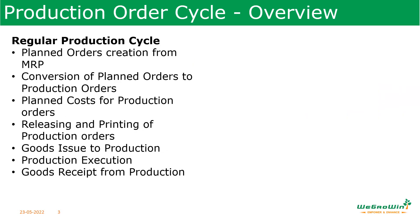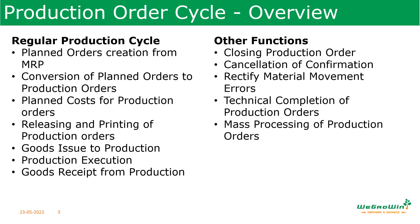Now let us see the overview of the production order. Planned orders are created from MRP — material requirement planning — and then these planned orders are converted into production orders. The planned cost for the production orders is calculated, then the production orders are released, printed, goods issue is done to execute the production, production is done on the shop floor, and then goods received from the production is done.